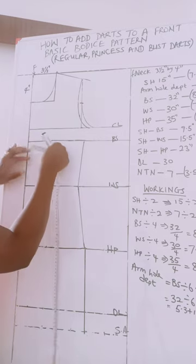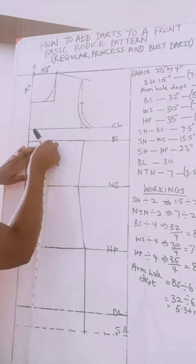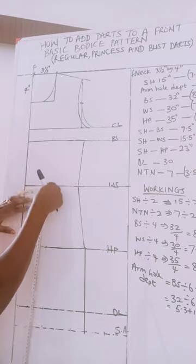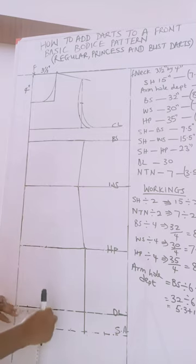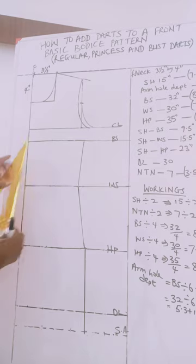Add a bust point and you mark 3.5. You mark at 3.5 at the waistline, mark at 3.5 at the hip, 3.5 at the dress length, 3.5 at the hem, and then you use a ruler to connect all that together.